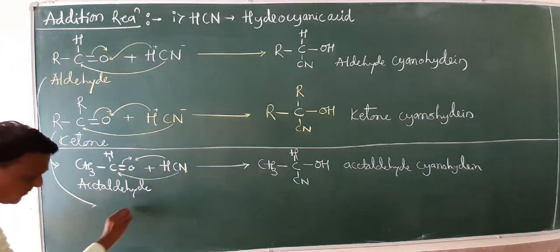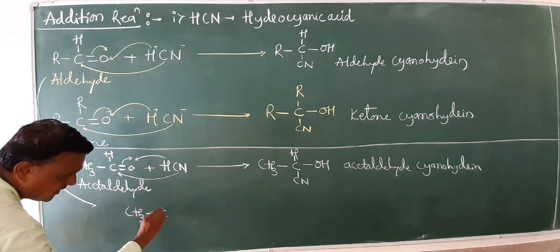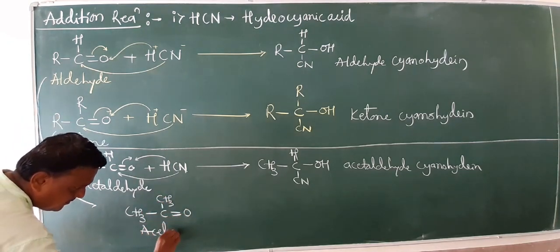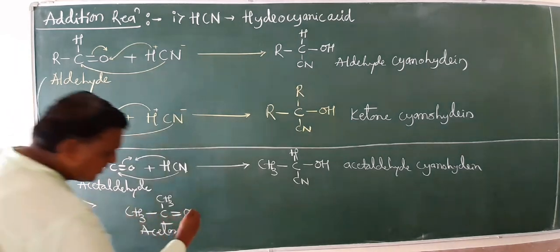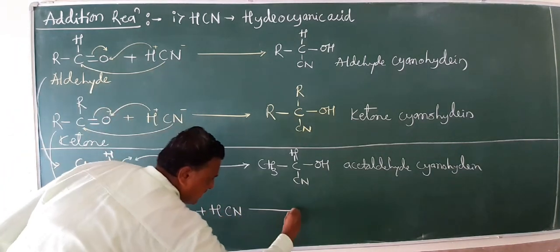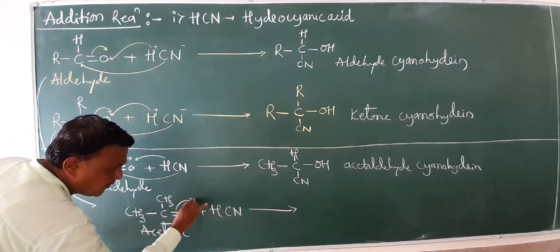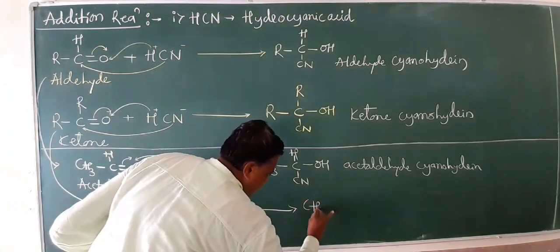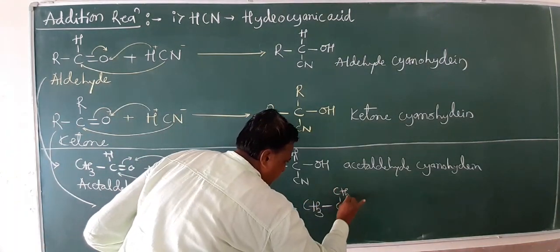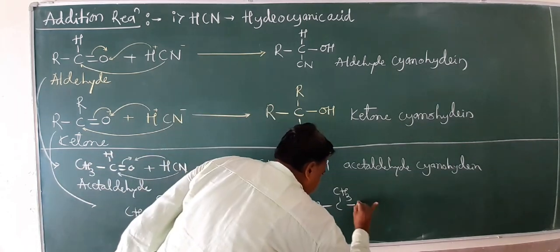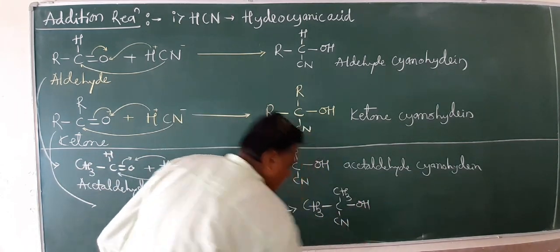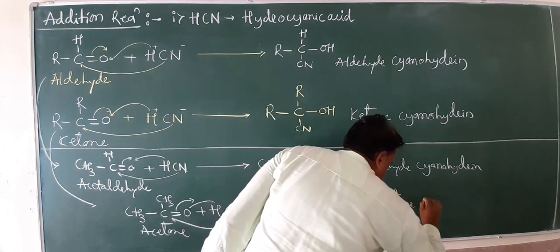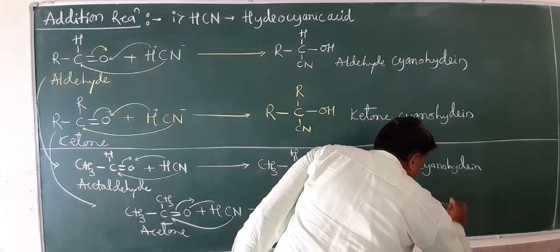Similarly for the ketone example: acetone is CH₃-C(=O)-CH₃. When acetone reacts with hydrocyanic acid, the pi bond is cleaved. The product is CH₃-C(OH)(CN)-CH₃, and the final answer is acetone cyanohydrin.